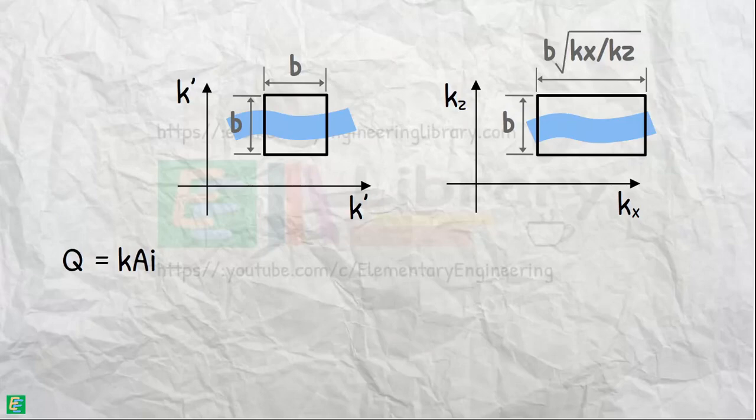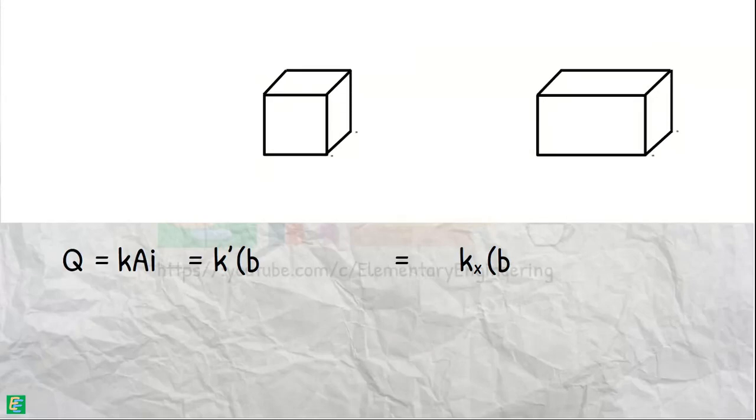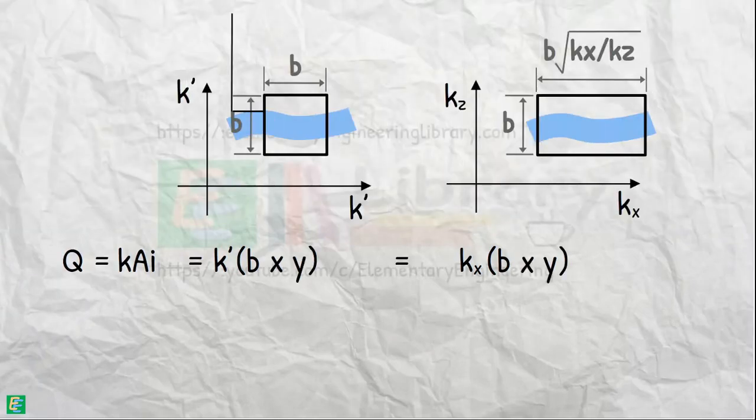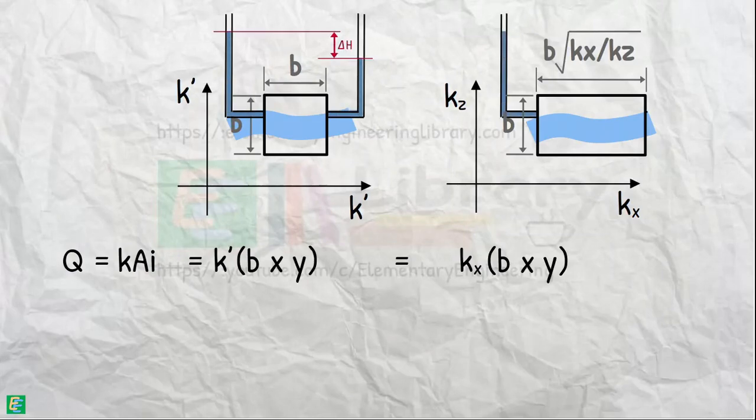Permeability in the x direction is k' and kx for the respective sections. Area of the flow is height b and width, let's say, y.